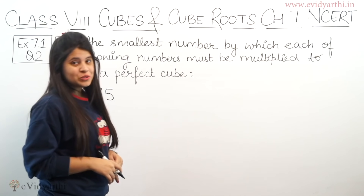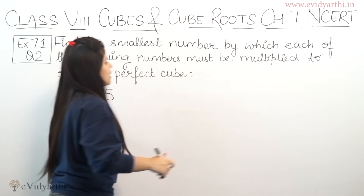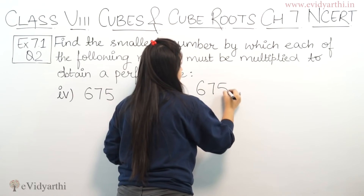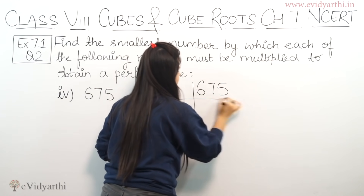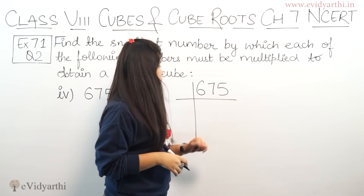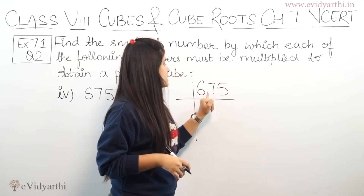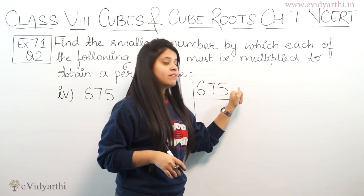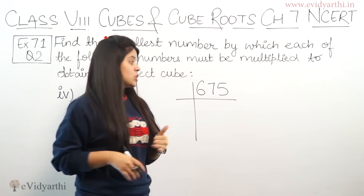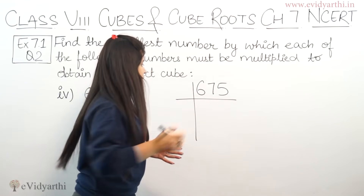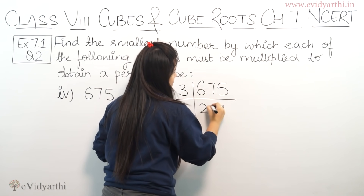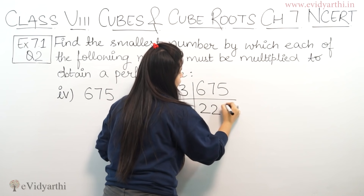Now coming to the fourth part. The number is 675. Let's prime factorize this. First, let's add the digits to check divisibility by 3: 6 + 7 + 5 = 18, which is divisible by 3. So we start with 3. Dividing 675 by 3 gives 225.